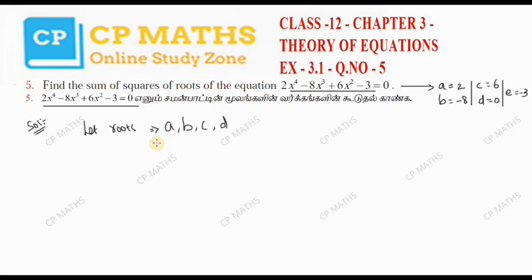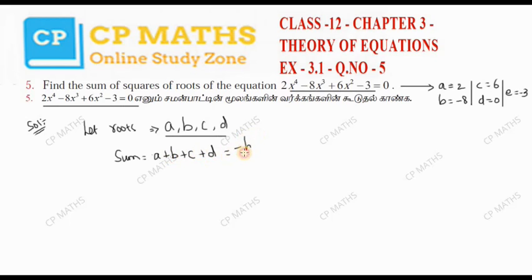So we have the equation and the values, and the roots are A, B, C, D. First, the sum of roots: A plus B plus C plus D equals minus b by a. So that is minus of minus 8 divided by 2, which equals 4.